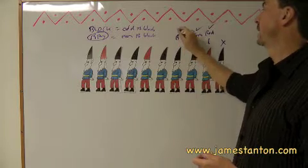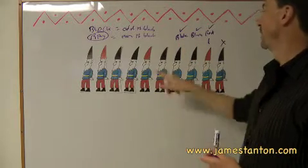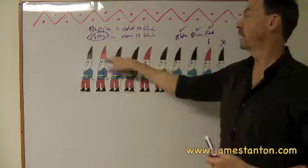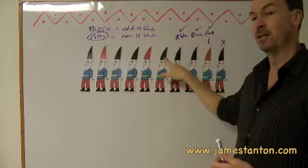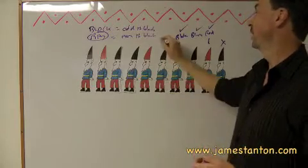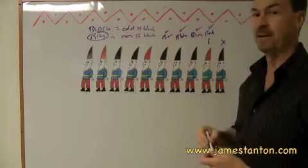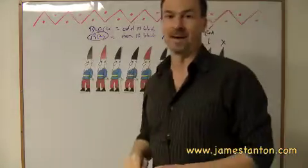So we'll say black and so on down the line. This fellow sees three in front, heard about two black hats behind him, knows there's an extra black hat somewhere around to make them an even count. He'll also say black and down the line, the gnomes can survive.